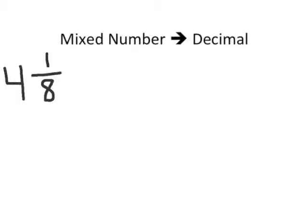So for this example, we're going to learn how to convert a mixed number into a decimal. So what is a mixed number? A mixed number is a combination of a whole number, which in this case is 4, with a fraction, which in this case is 1/8.